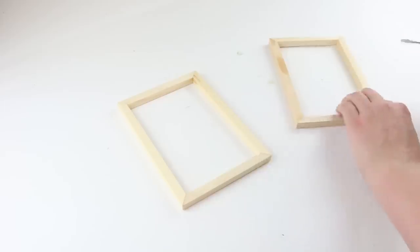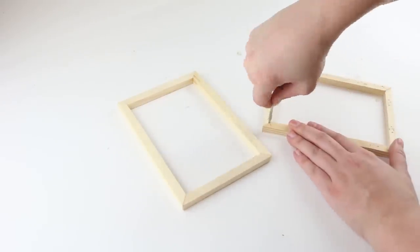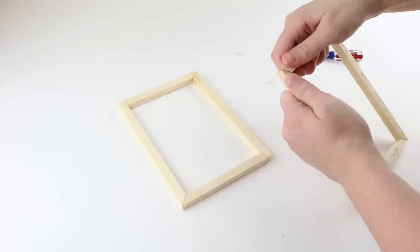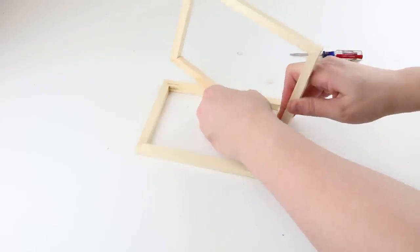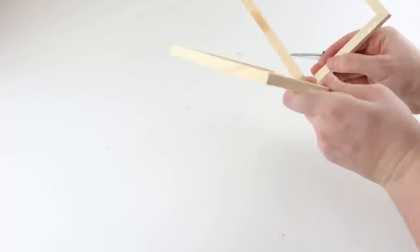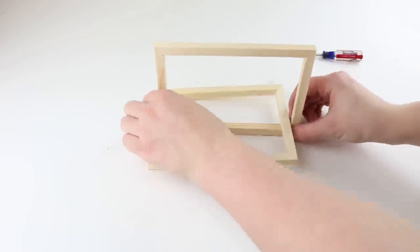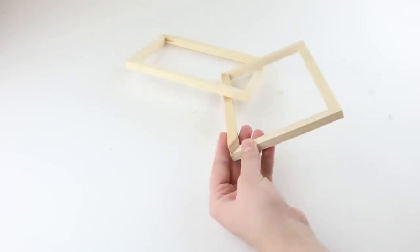To make the shape of the lantern, you'll need to take apart one of the corners. I just ended up breaking it apart. Then, put the other canvas through the hole and hot glue the corner back together.